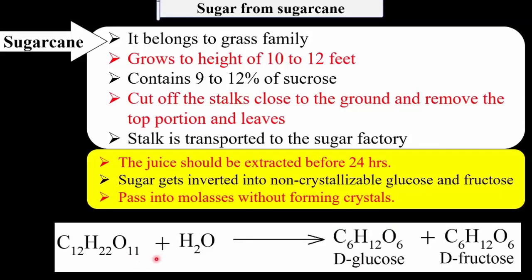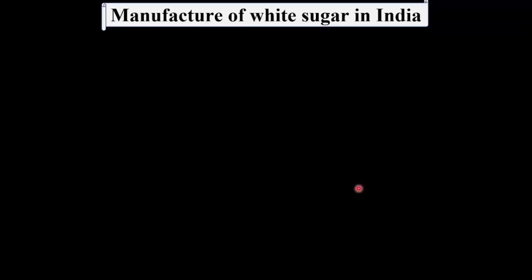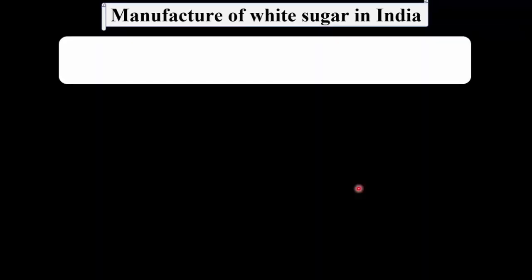The chemical reaction of this inversion is shown in the figure. This inversion of sugar is also called hydrolysis, because the sugar undergoes a hydrolysis reaction and forms dextrose and fructose. Now we will see the manufacture of white sugar in India.